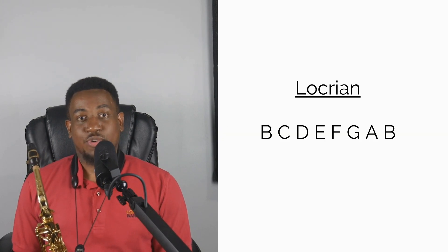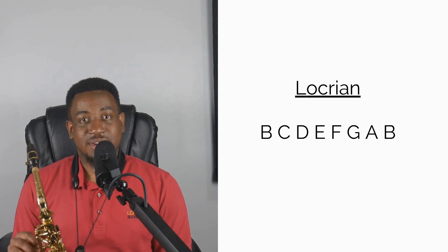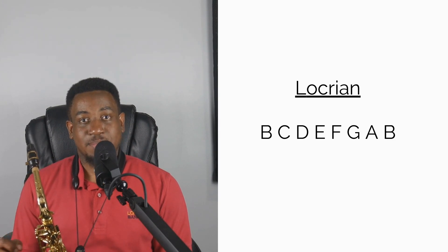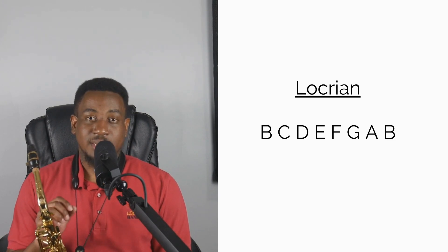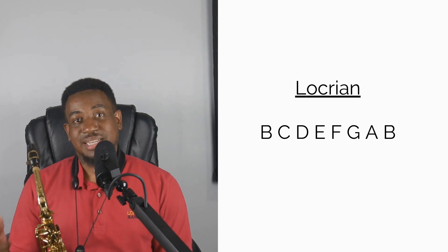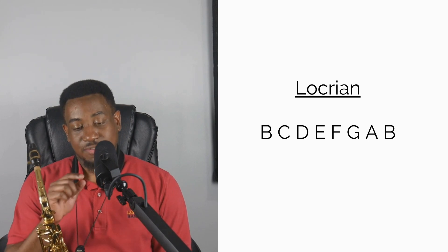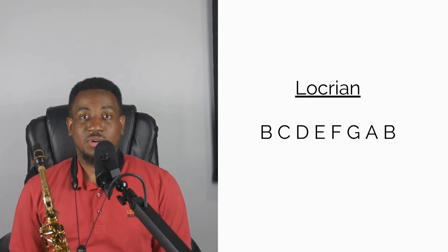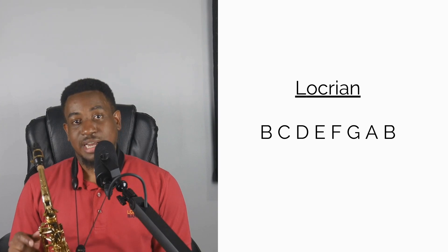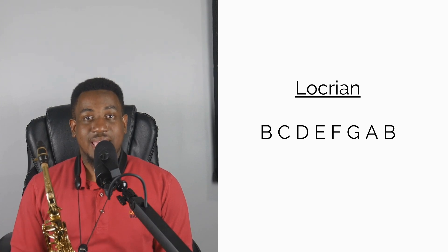The last mode is the Locrian mode, which is the seventh mode of the major scale. In the key of C, B is the seventh scale degree, so it'll be B Locrian. You start from B all the way to B playing all the notes of the C major scale: B C D E F G A B.